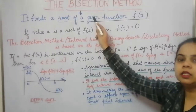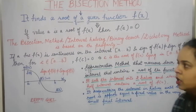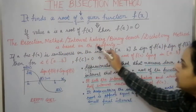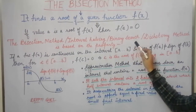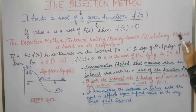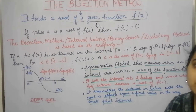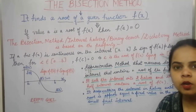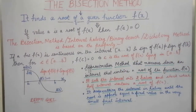The bisection method is also known by other names: the interval halving method, the binary search method, and the dichotomy method. All these methods are based on one mathematical formula.